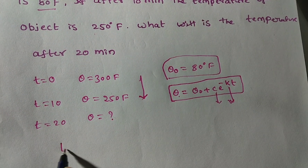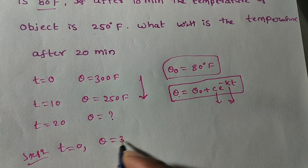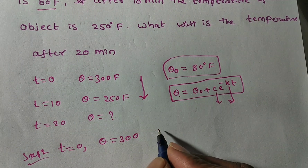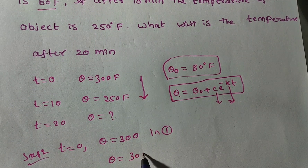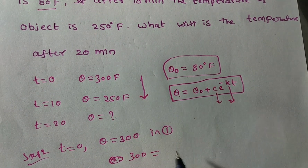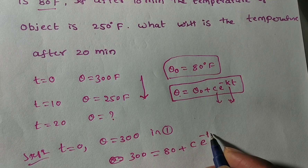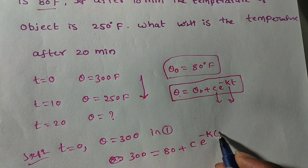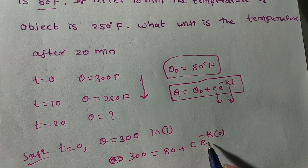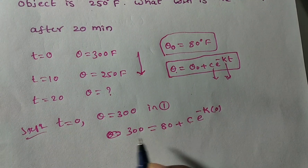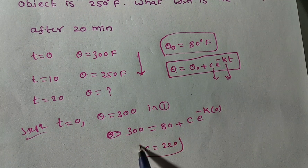Step 1: finding C. Using the initial condition T is equal to 0, substitute into equation 1. Theta is 300, so 300 equals 80 plus C times e to the power of minus K times 0. Since e to the power of 0 is 1, this gives 300 equals 80 plus C. Therefore C equals 300 minus 80, which is 220.